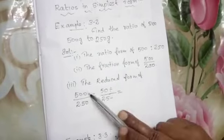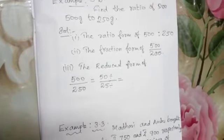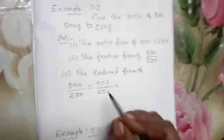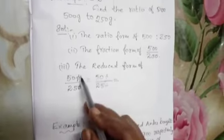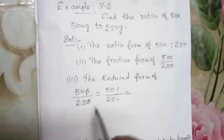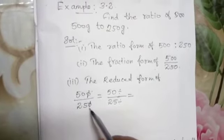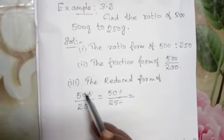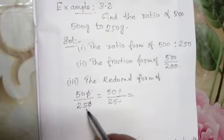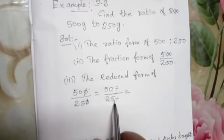Third, find the reduced form. We have 500 divided by 250. Using the cancelling method, cancel the zeros — we get 50 divided by 25. Now divide both by 5: 50 divided by 5.